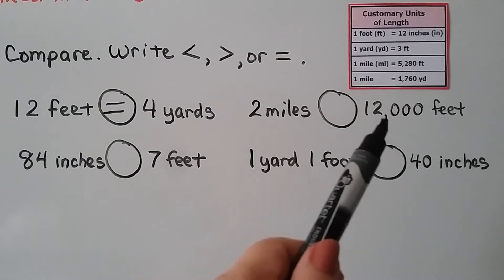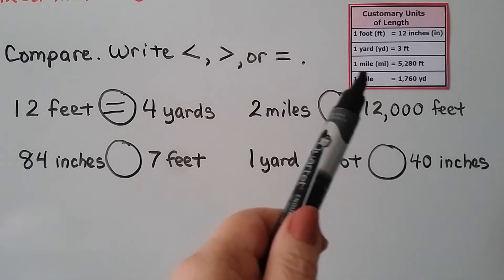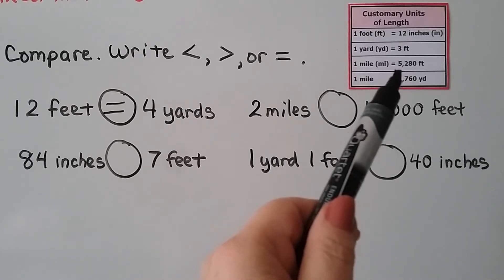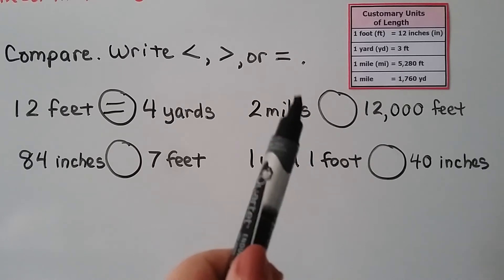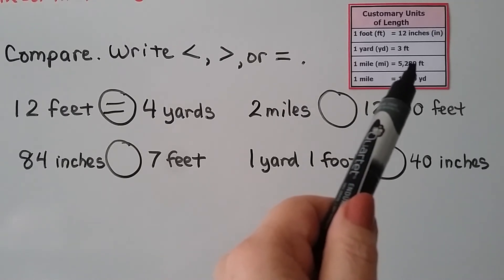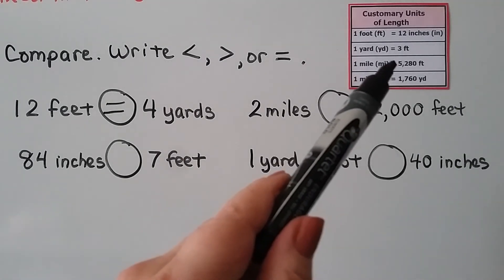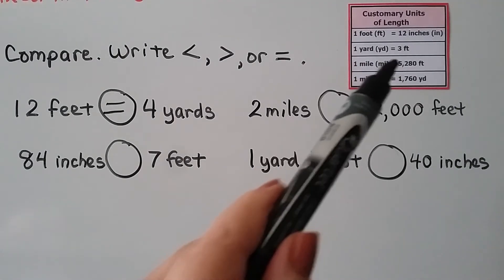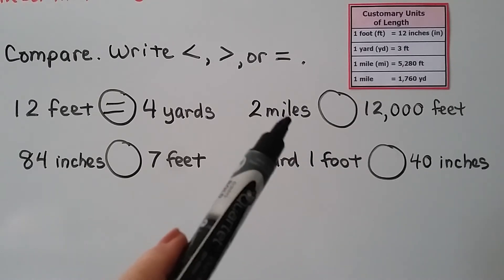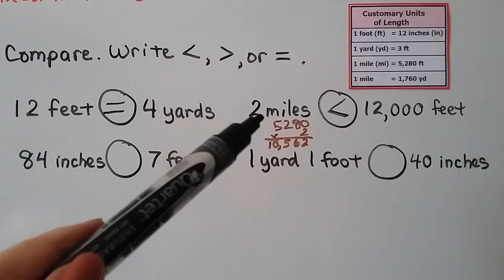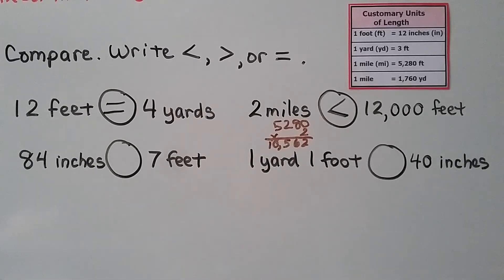We have 2 miles and 12,000 feet. One mile is 5,280 feet. Two times 5,280 is 10,560 — we don't have enough to reach 12,000. So 2 miles is less than 12,000 feet.